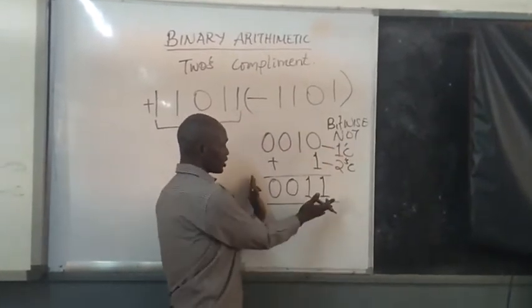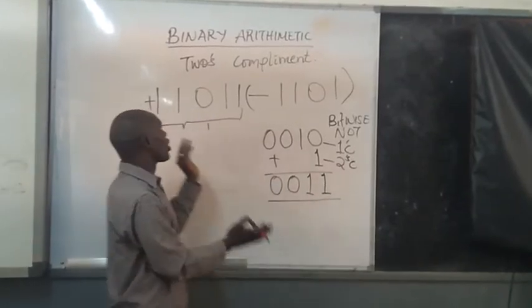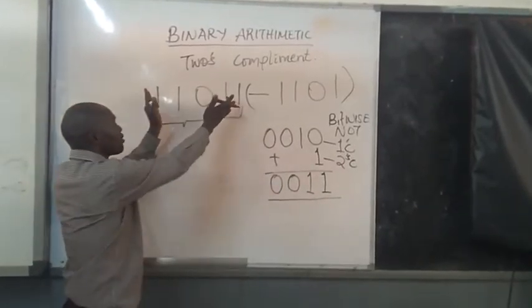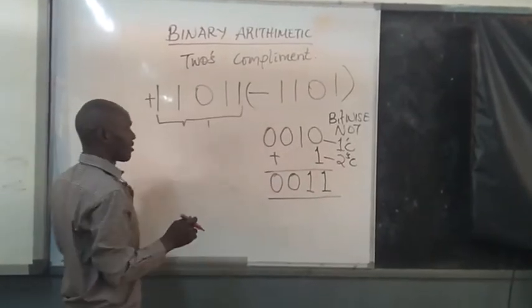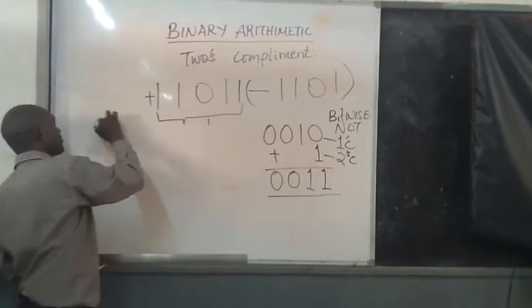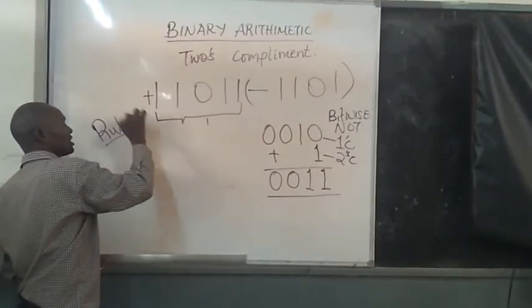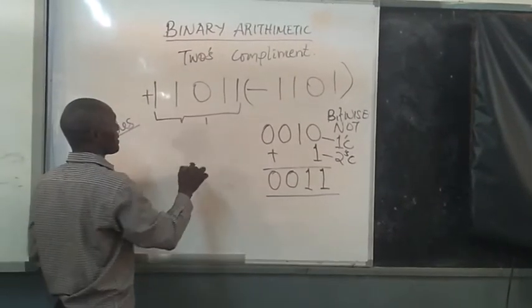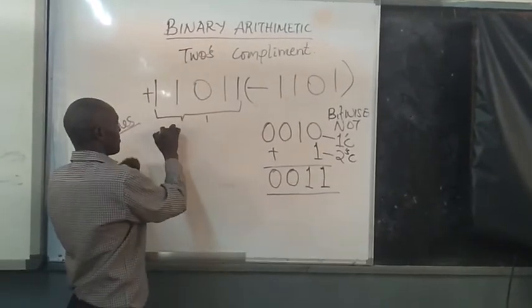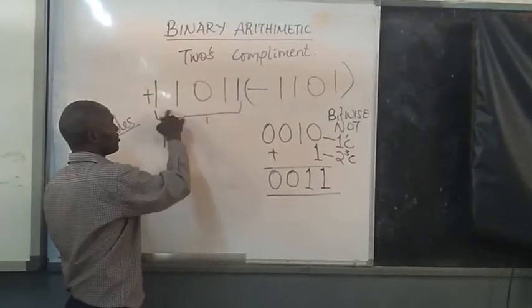Now, after getting the two's complement, we need to go and add the positive part of it. For this, we are following the addition rules from our previous tutorial.